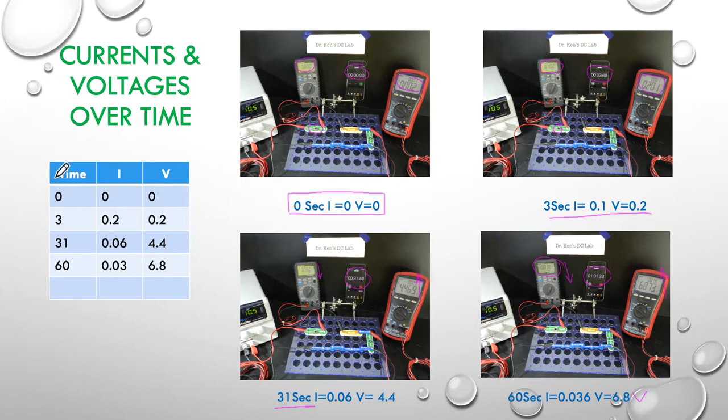So to summarize that, I've simply built this little table. Zero time, three seconds, 31 and 60. I've simply recorded all the currents and the voltages and can demonstrate that the current is dropping as the voltage increases, which is what we need to understand as the capacitor charges.